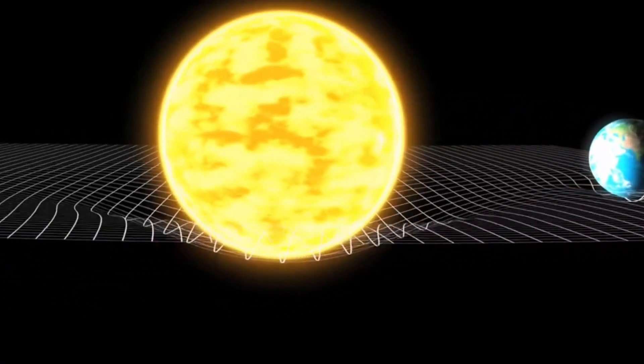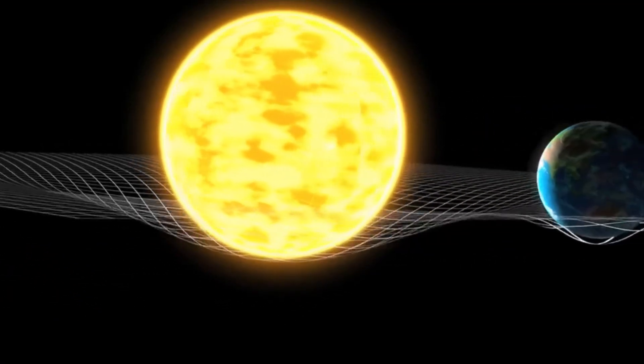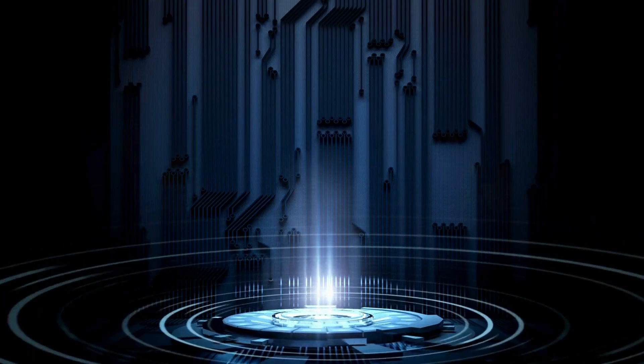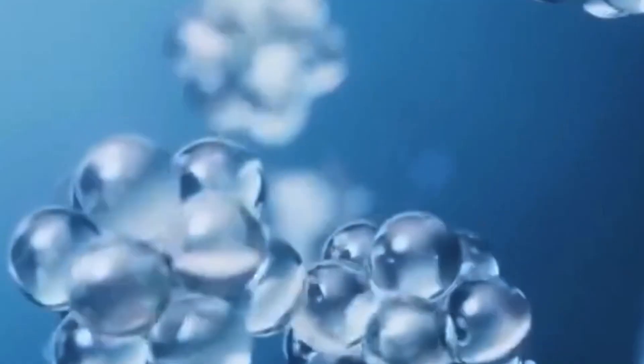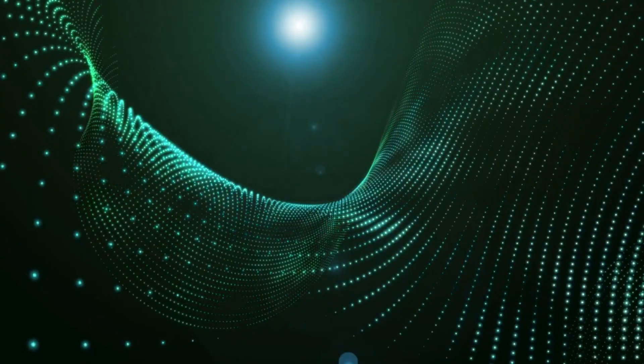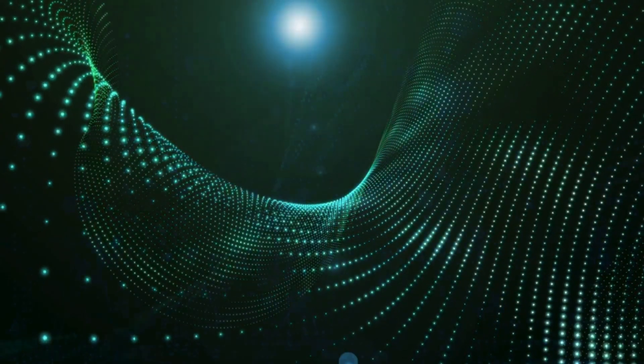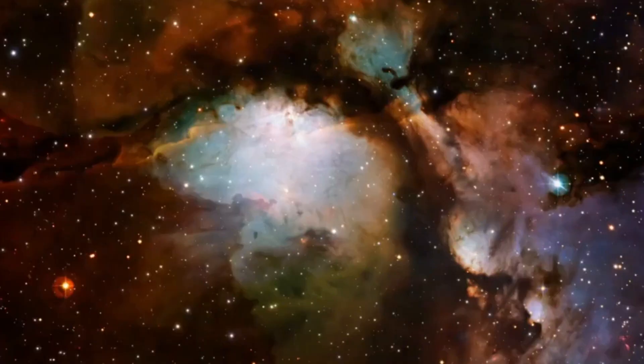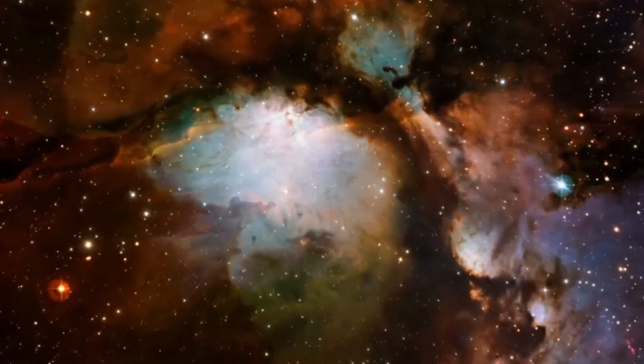For instance, let's say two entangled particles have opposite spins. If one particle's spin is measured and found to be up, the other will instantly be found to be down. It's as though the measurement on one particle determines the state of the other, even though the particles may be separated by vast distances.